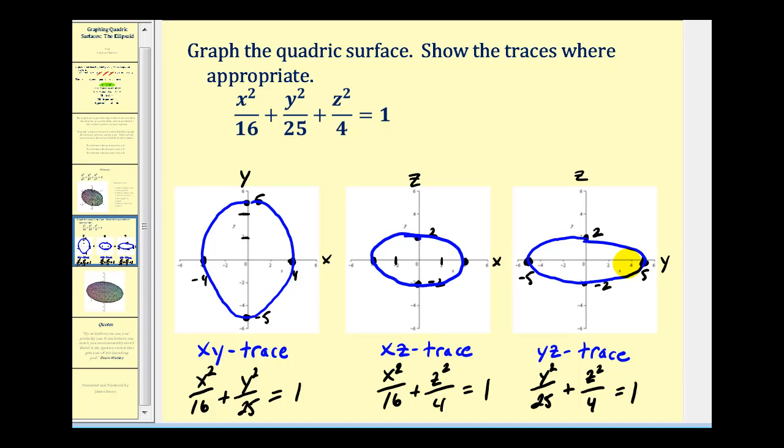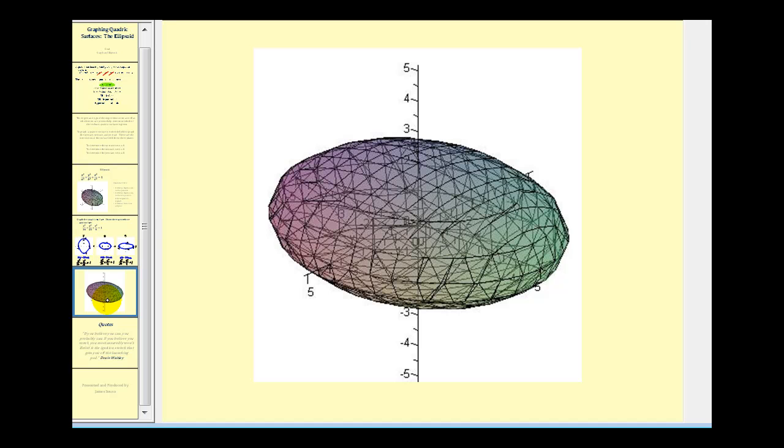Now at this point, we could try to graph it by hand, but graphing software is so readily available these days, we're going to go ahead and graph this quadric surface using Maple. It would look something like this.